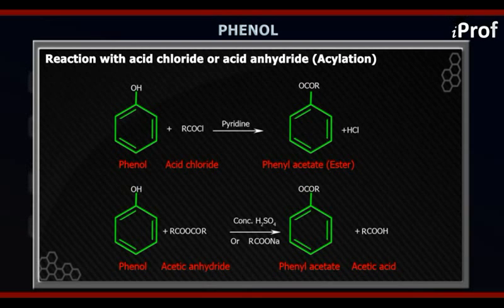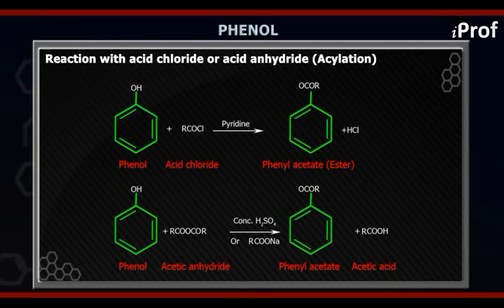In this case, because Cl is a good leaving group, it will move out, and hence it forms phenyl alkenoate.